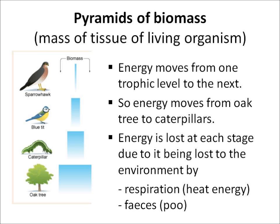Those are the two ways that energy is lost as it moves up the food chain. This determines the shape of something called a pyramid of biomass, which shows the mass of living tissue in each organism moving up the chain. The pyramid of biomass has a pyramid shape because energy is being lost at each stage.